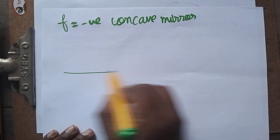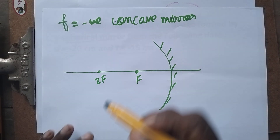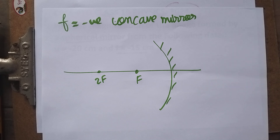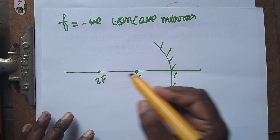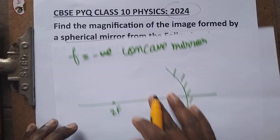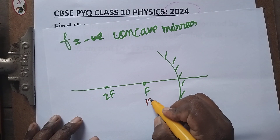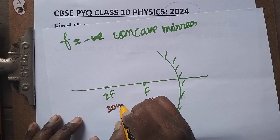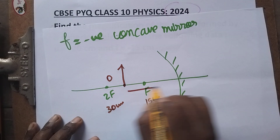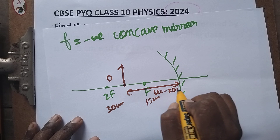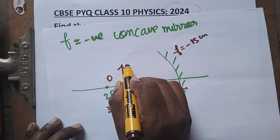Now I am going to draw the diagram. Here I have the concave mirror. I mark f and 2f. They didn't ask for a diagram, but I'm drawing it to understand the expected value. The object is placed at u = 20 cm. Since f = 15 cm, then 2f = 30 cm. The object at 20 cm is placed between f and 2f. u is always negative, so u = -20 cm, and the focal length for a concave mirror is also negative.